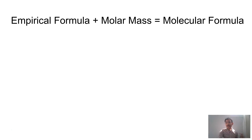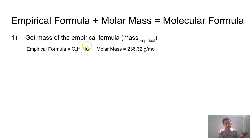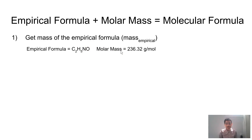If we have the empirical formula and the molar mass for a compound, we can come up with the molecular formula. There are a few simple steps. So if we have an empirical formula of C2H5NO and a molar mass of 236.32 grams per mole, we can figure out using these two things what the molecular formula will be.